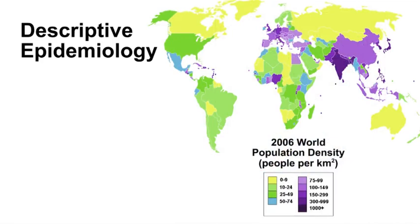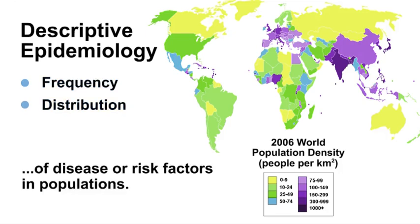Descriptive epidemiology deals with the frequency and the distribution of disease or risk factors in populations. Descriptive epidemiology can be used for hypothesis generation, but it usually cannot be used to test hypotheses.